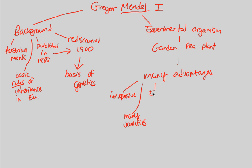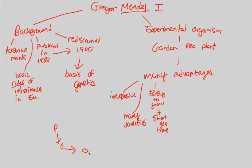In addition, the garden pea plant was easy to grow. In his time at the Austrian monastery, where he had much free time, he was easily able to grow these pea plants. They also had a short generation time, meaning that going from a parent generation to an offspring generation — and then another offspring generation — is very quick. This generational development is easy to control as well.